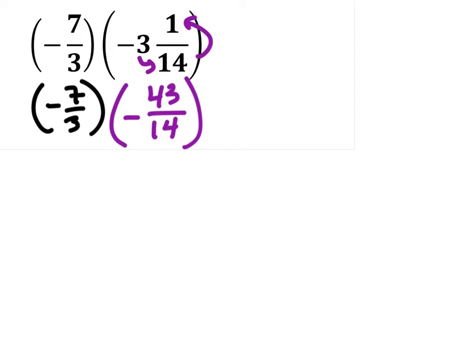Now at the same time, we are multiplying two negative numbers here and here. So since we're multiplying two negatives, 2 is even, so we know our answer is going to be positive.